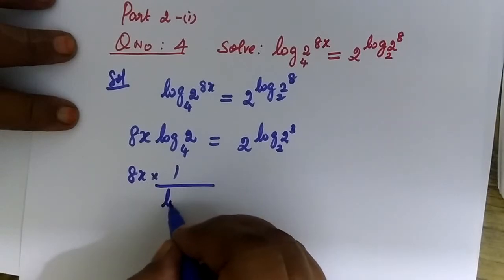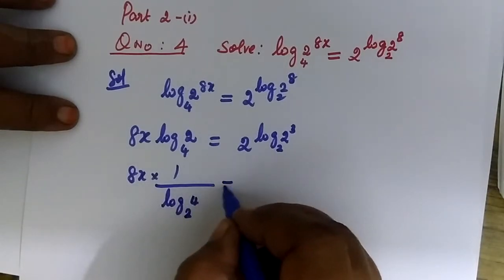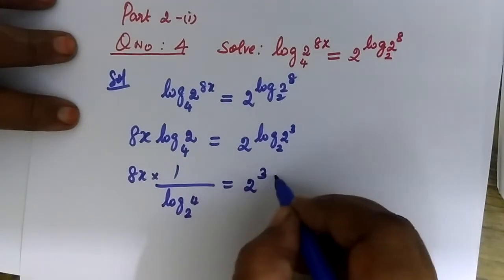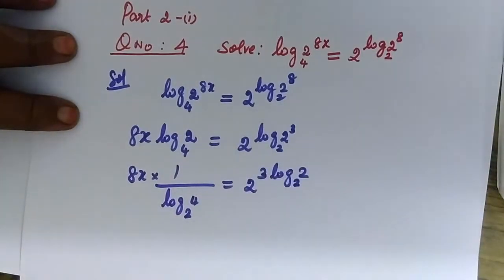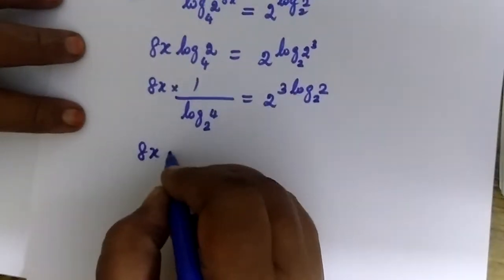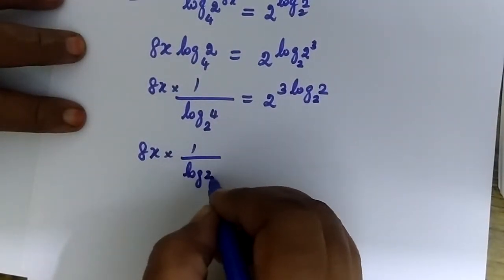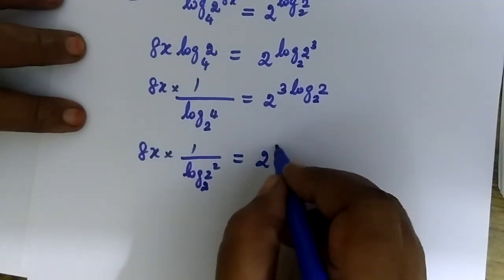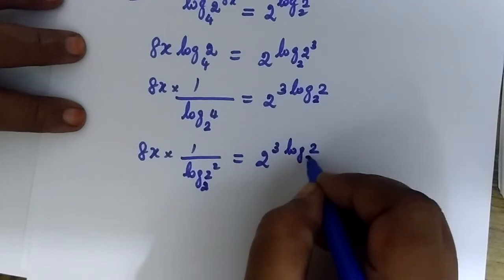This is equal to 1 by 1x. This is equal to 2 into 3. Now, 4 can be written as 2 squared, power only 8x. So this is equal to 2 into 3. Then, log 2 to the base 2 — again this 2 will come to the front, giving log 2 to the base 2.